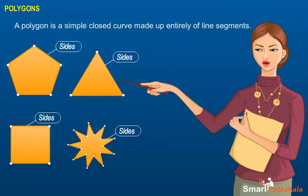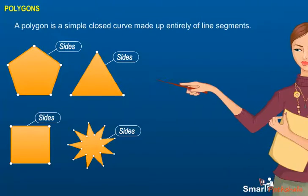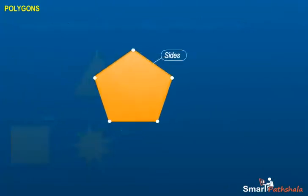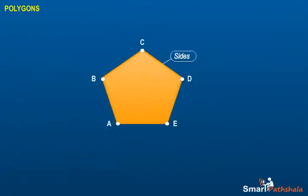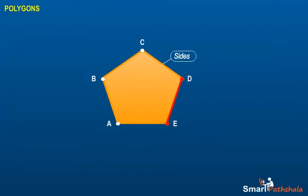The line segments forming a polygon are called its sides. The sides of polygon A, B, C, D, E are AB, BC, CD, DE, and EA.